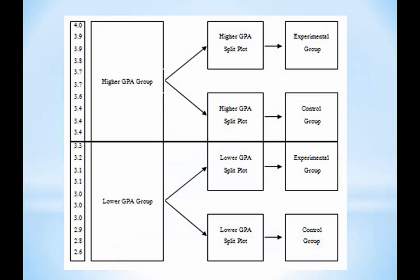Blocking assumes that people within a group would score the same on the dependent variable—you know this by reading the literature, doing a lit search, using PsycINFO. Once you've measured the variable and got your blocks of high and low, you can split each block into an experimental or control group. Recall my example from the between-groups screencast: 20 students with GPAs from the registrar's office, rank-ordered, split at the median into a high-GPA block and a low-GPA block, then randomly assigned to conditions.